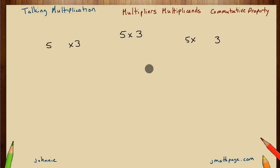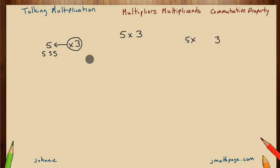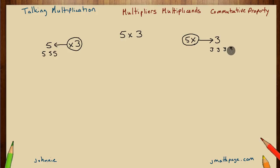In the first one, I said 5 times 3 — meaning I want the 5 to be multiplied 3 times. So we get 5, 5, and 5. In the second one, I said 5 times 3 — meaning I want something done 5 times, and what I want done is 3. So that looks like five 3s: 1, 2, 3, 4, 5.